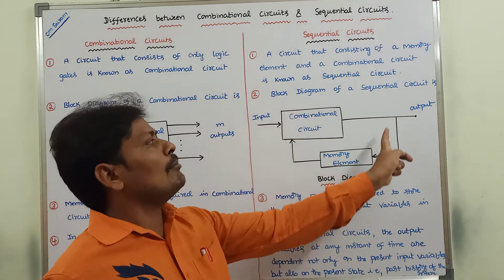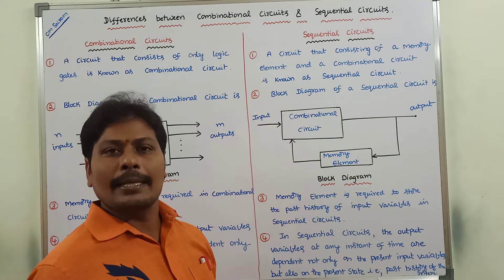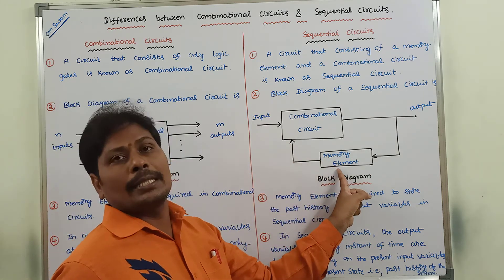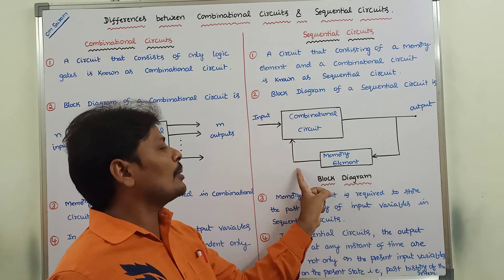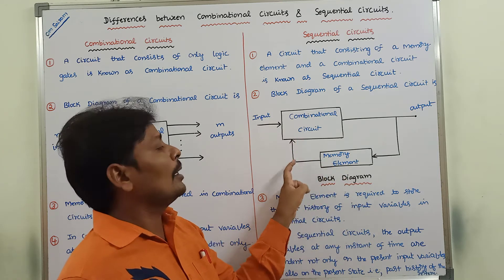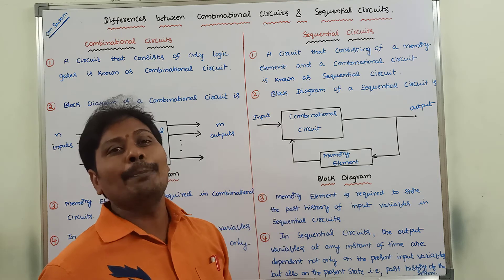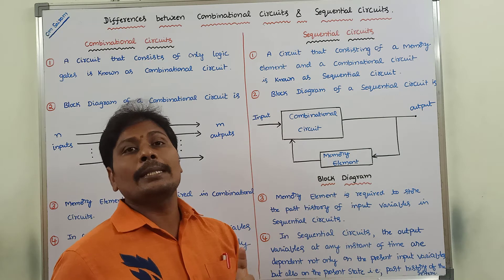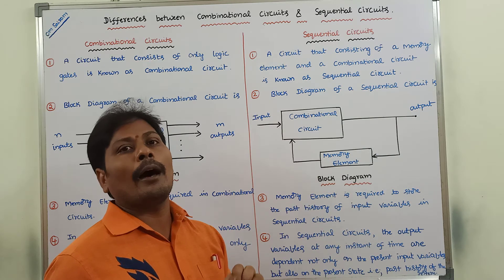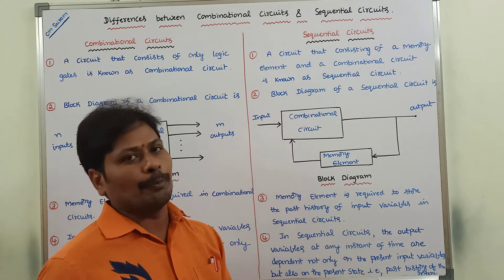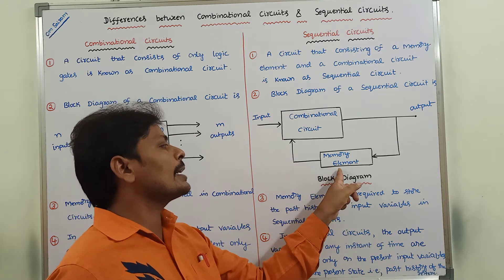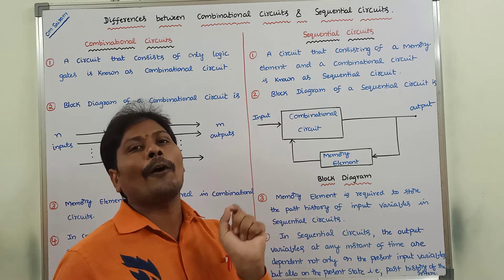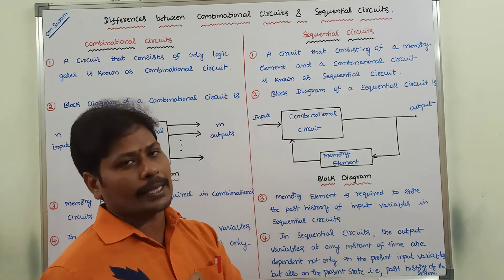This is the block diagram of a sequential circuit. Here, the memory element is connected to the combinational circuit by using a feedback path. The memory element is used for storing the past history of the inputs. This past history of the inputs determines the present state of the sequential circuit.